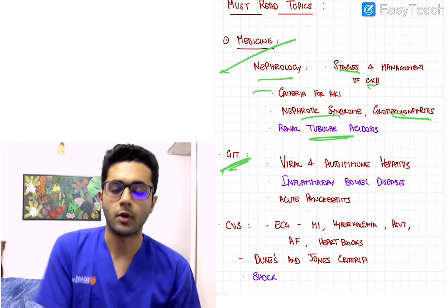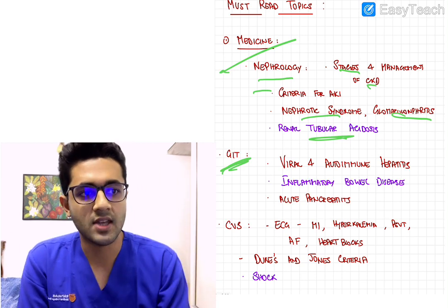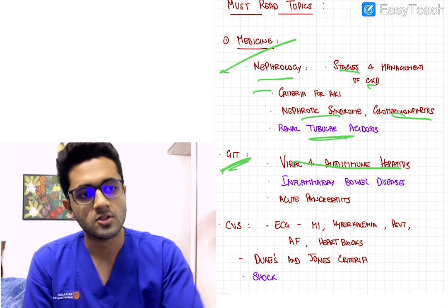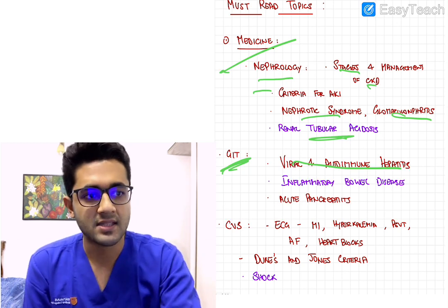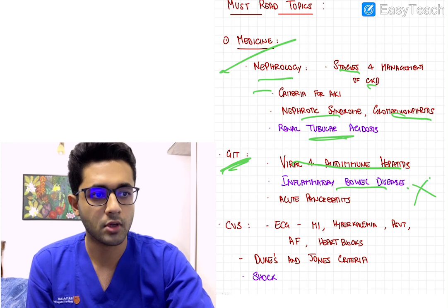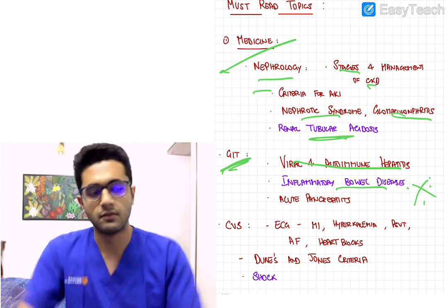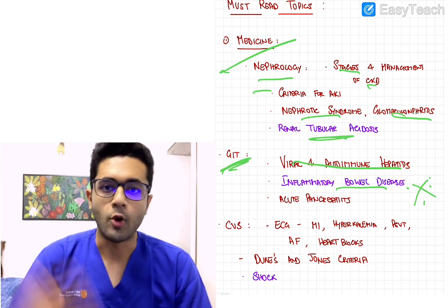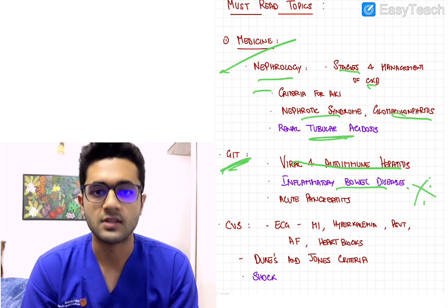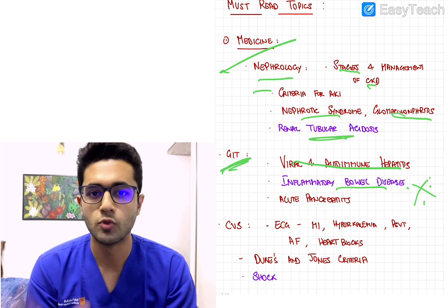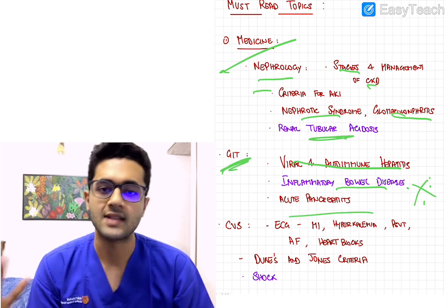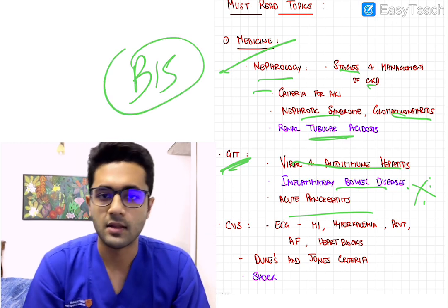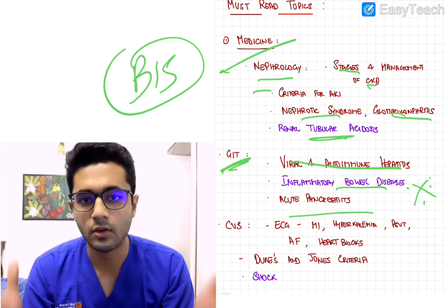Next, GIT — probably the most important segment from medicine. Viral and autoimmune hepatitis are frequently asked: the different types of viral hepatitis, markers, etc., which also integrates with microbiology. Inflammatory bowel disease is probably the most important topic — it's important from surgery, patho, and medicine. Crohn's and ulcerative colitis, and on top of that, the extra-intestinal manifestations of these diseases are also frequently asked. Next is acute pancreatitis — important to know the BISAP score and to some degree the Ranson's criteria.